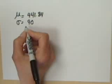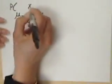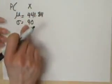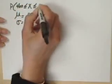What is the probability that a worker earned between $400 and $500? So the probability that we're after is probability that X, our normally distributed random variable, is between $400 and $500.